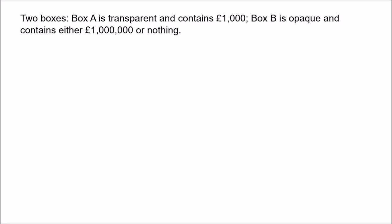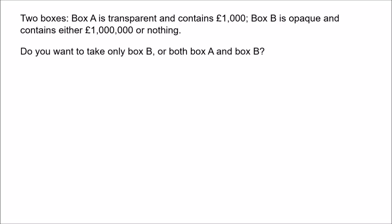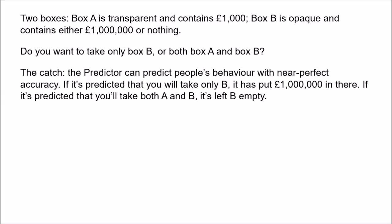We begin with two boxes, A and B. Box A is transparent and contains £1,000. Box B is opaque and contains either £1,000,000 or nothing, and you're asked: do you want to take only Box B, or both Box A and Box B? Well, that's not too difficult a problem, right? But there's a twist. There is a being known as the predictor, which can predict people's behaviour with near-perfect accuracy, and the predictor has decided the state of Box B on the following basis.